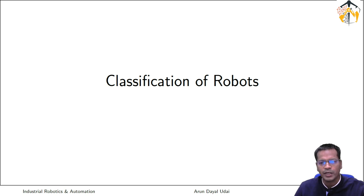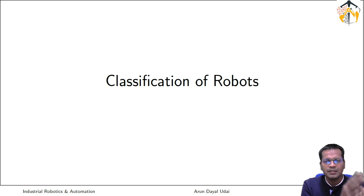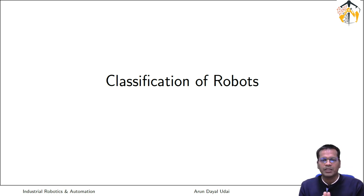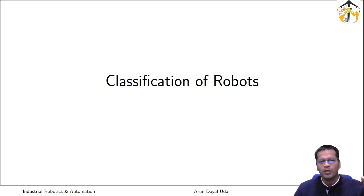In today's class, we will look at additional parameters — additional things which are very important when you start classifying a robot. Given a robot in hand, you should know which category it falls under and what its limitations are because of its structure. Not just limitations — its applications are also determined by the classification of different robots. So this particular class is more about that.